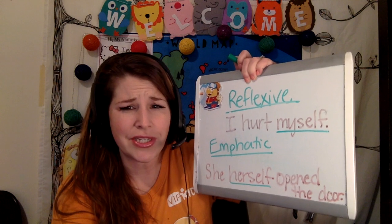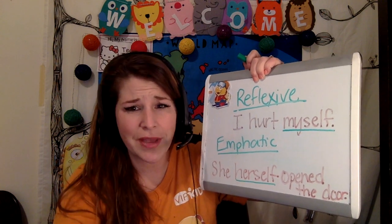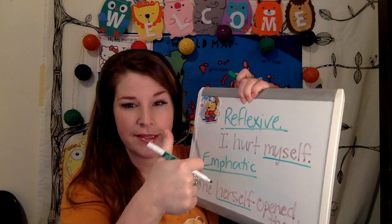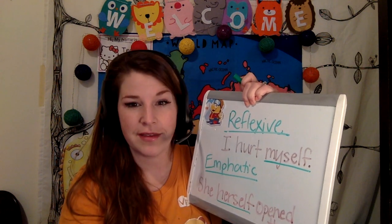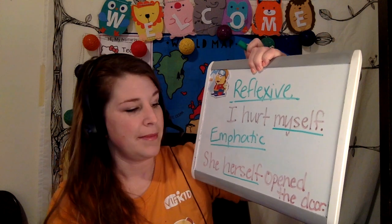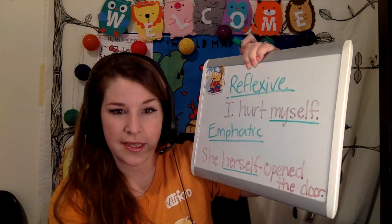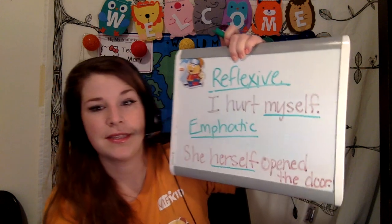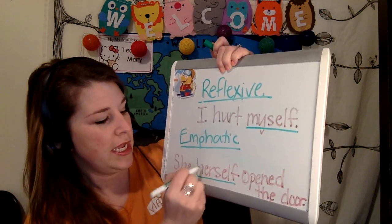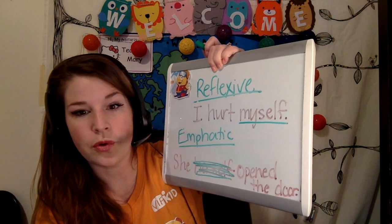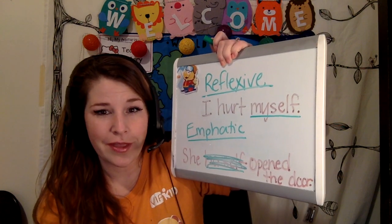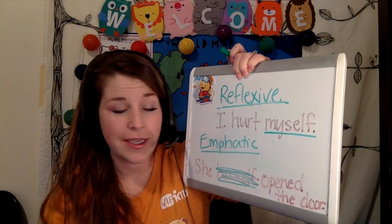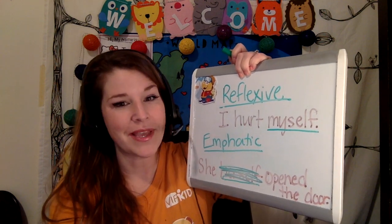How do you teach this to your student without talking so much about it? For reflexive: 'I hurt myself' — is it the subject? Yes, that means it is reflexive. Emphatic means it is just emphasizing the subject. You can get rid of it and the sentence will still make sense. So in emphatic, you can say 'she opened the door' and it still makes sense. Reflexive — it has to be there to make sense. Emphatic — you can take it away and it still makes sense.